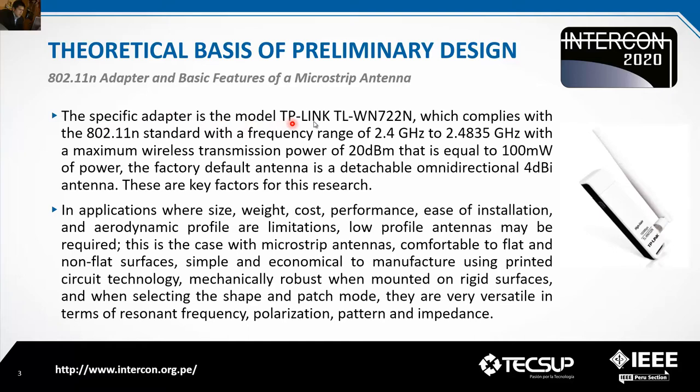The specific adapter is the TP-Link TL-WN722N, which complies with the 802.11 standard with a frequency range of 2.4 GHz to 2.4835 GHz, with a maximum wireless transmission power of 20 dBm, equal to 100 mW of power. The factory default antenna is an omnidirectional antenna with 4 dBi gain.